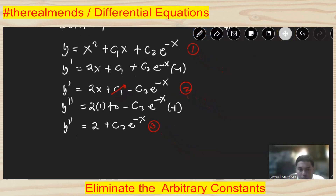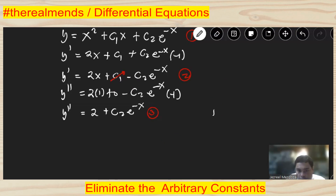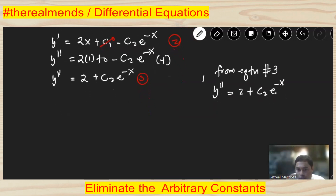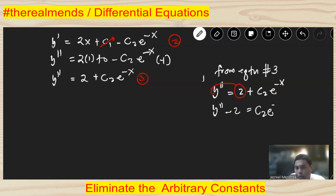From equation number three, we can isolate the value of c2·e to the negative x. We have y double prime equals 2 plus c2·e to the negative x, so transposing the 2 to the left side gives y double prime minus 2 equals c2·e to the negative x. This is the value for c2·e to the negative x.